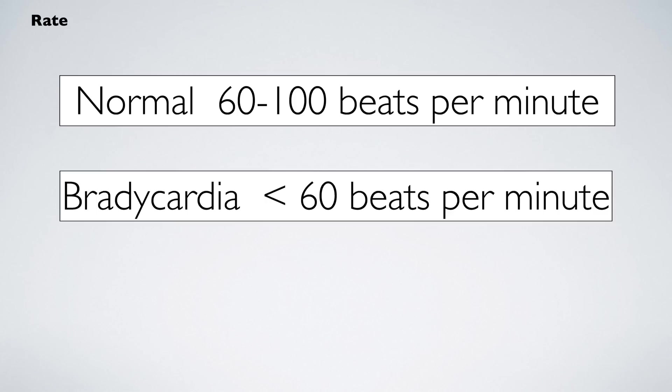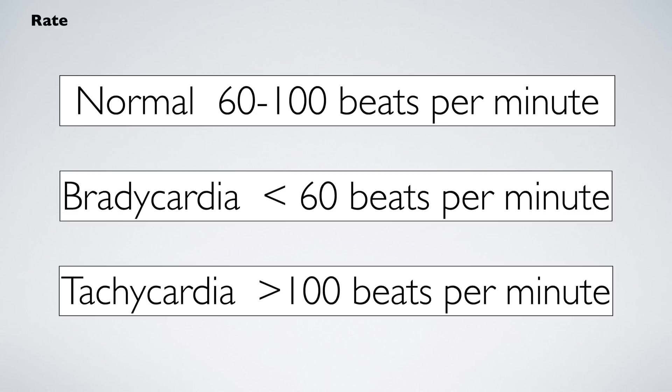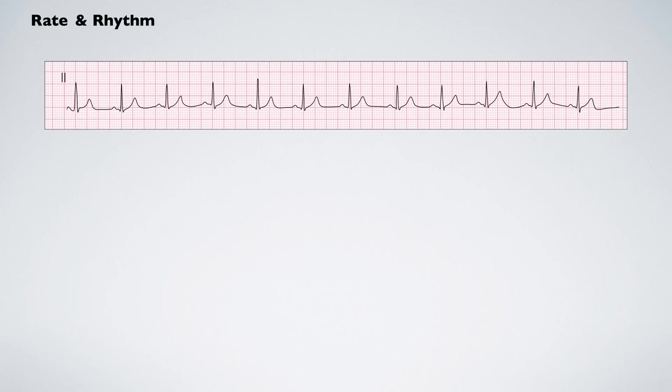A rate that falls below 60 beats per minute is referred to as a bradycardia. A rate exceeding 100 beats per minute is referred to as a tachycardia. Rate and rhythm are evaluated simultaneously, so while calculating the rate, it is important to observe whether the R-waves are evenly spaced. If they are evenly spaced, the rhythm is considered regular.